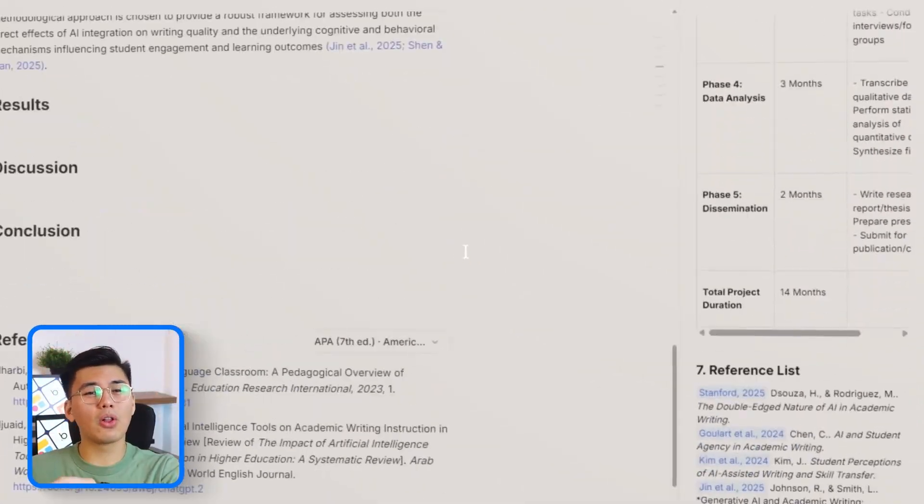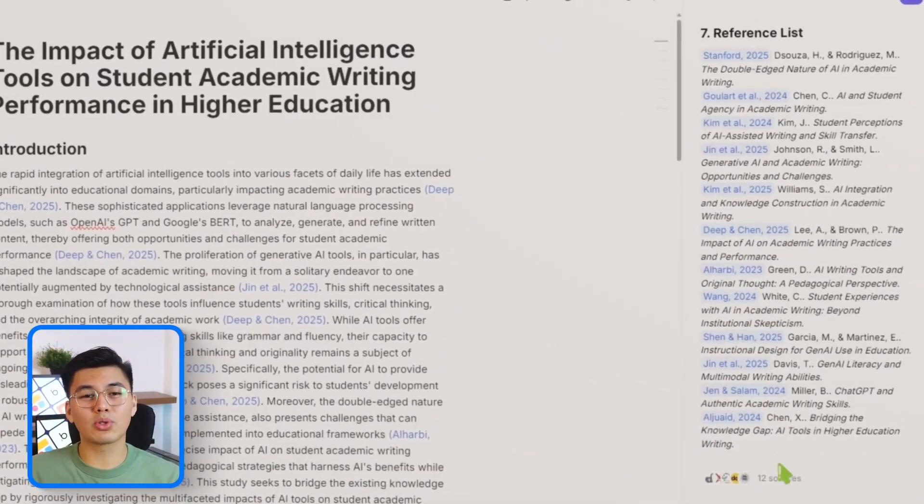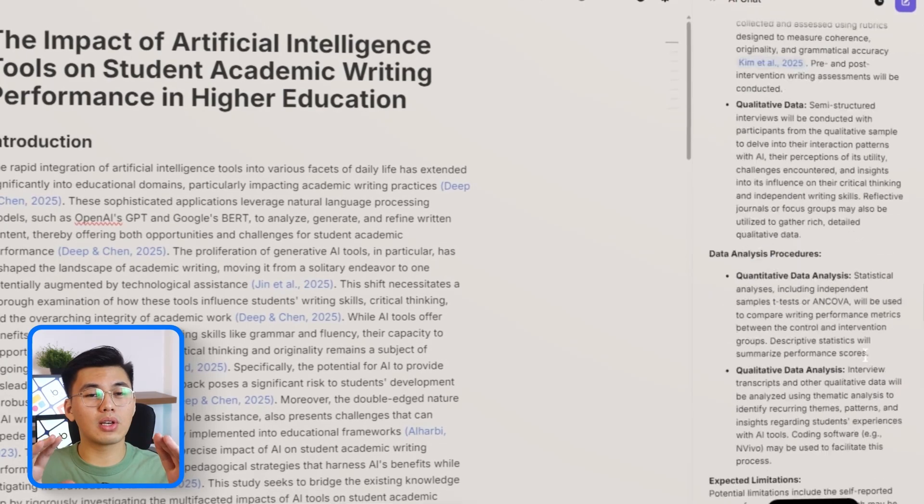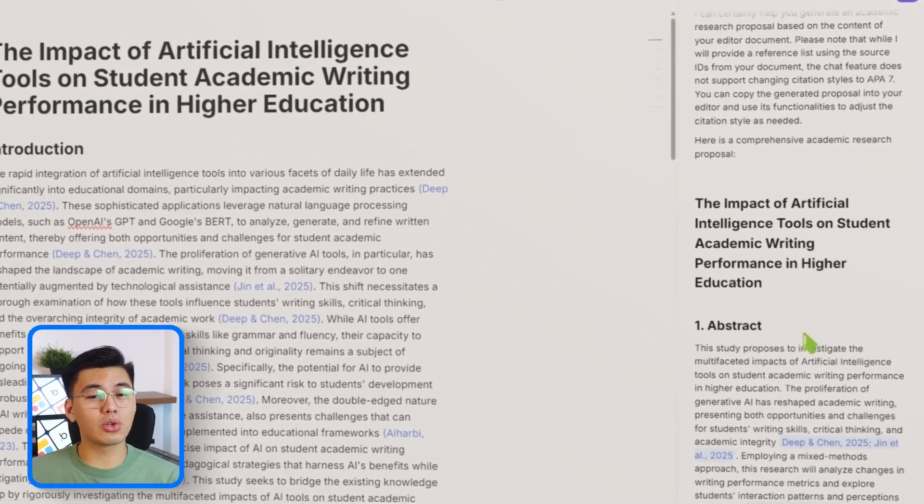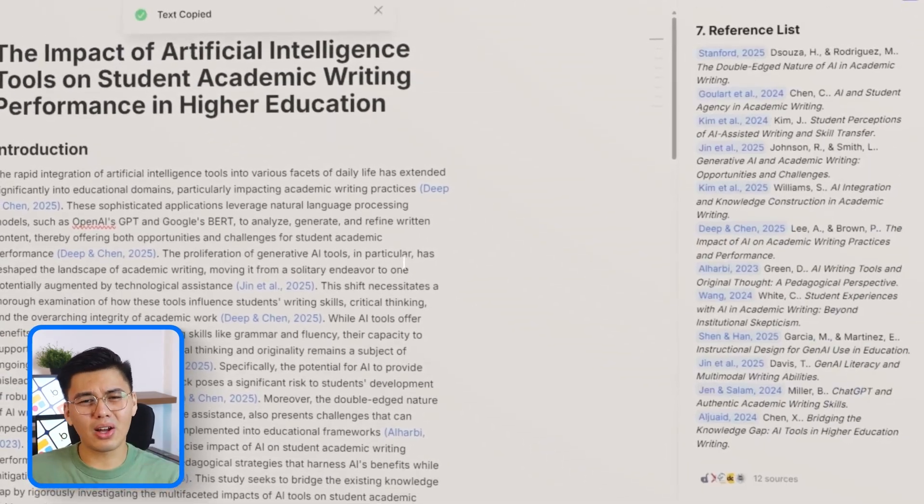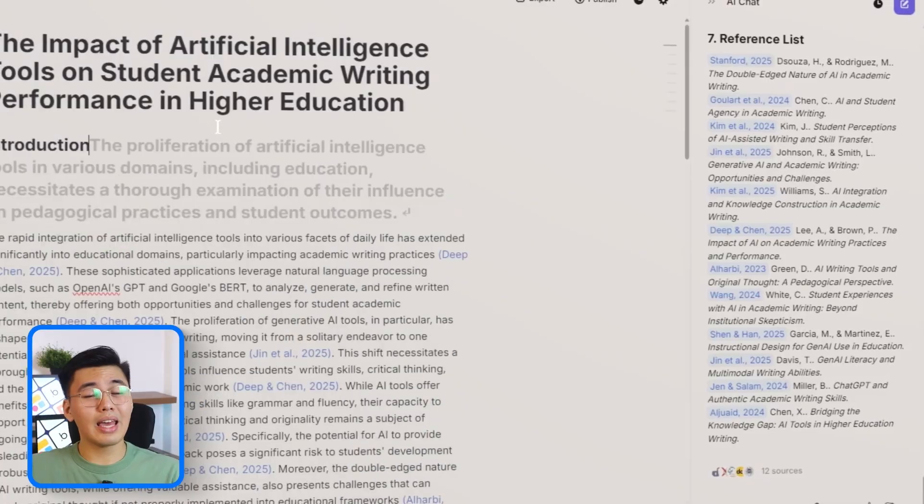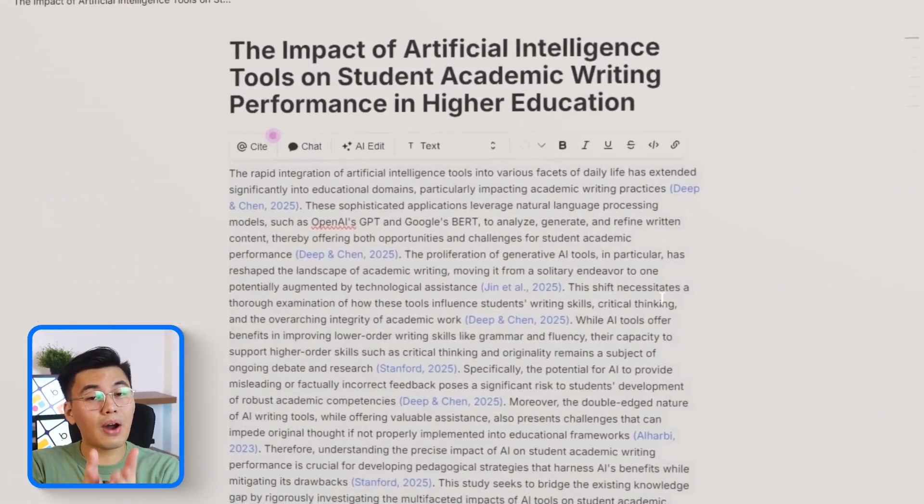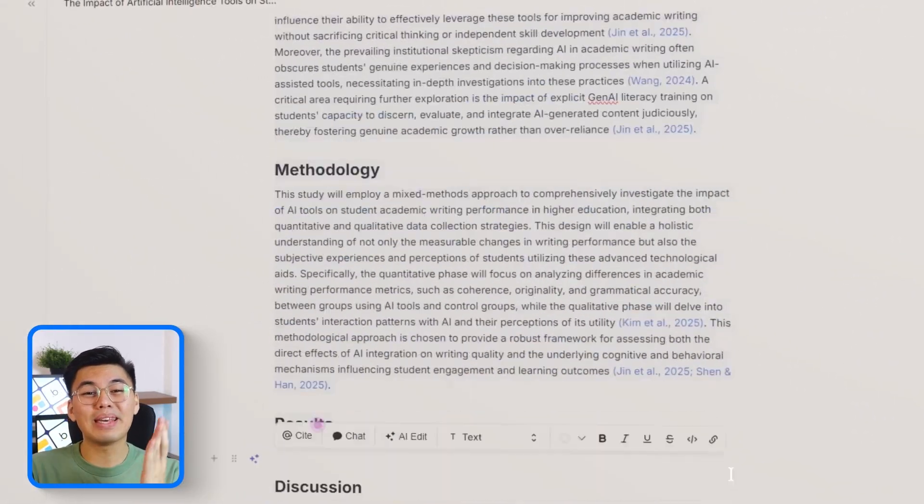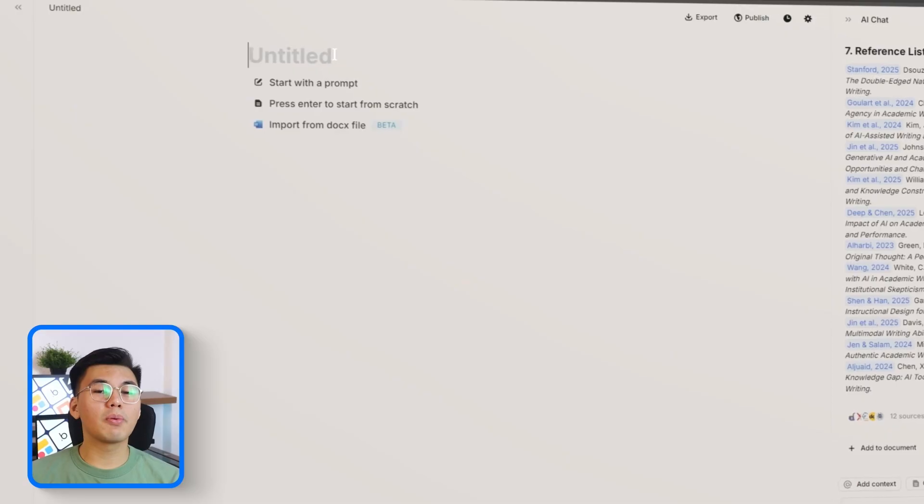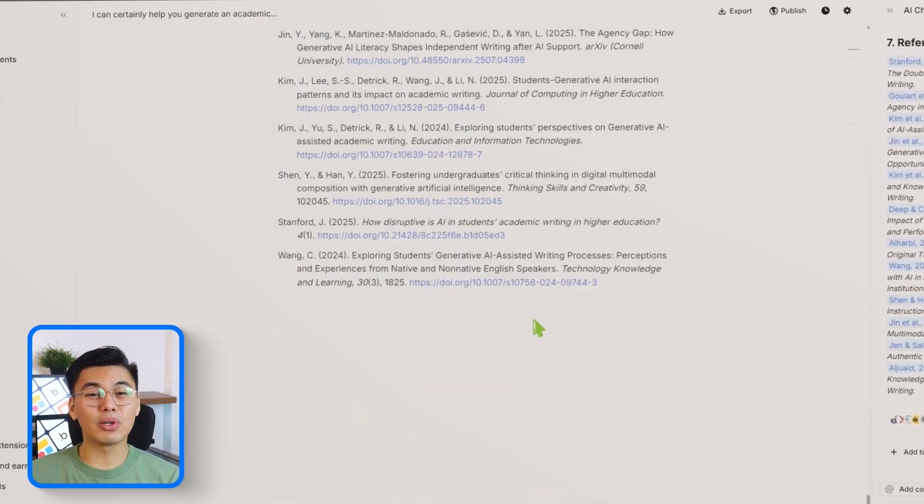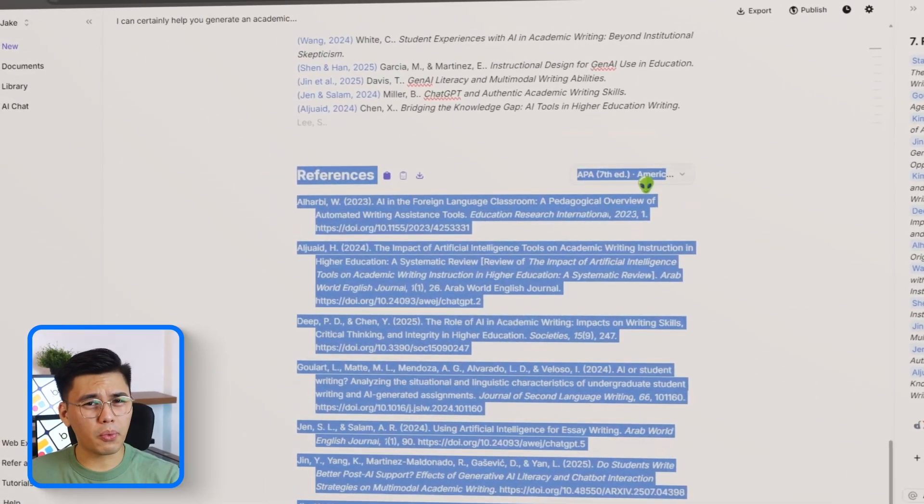Jenny processes the instruction and produces an entire research proposal in a matter of seconds. The title appears first, followed by a clean 100-word abstract, then a full background section, properly formatted research questions, a detailed methodology, the significance section, a realistic timeline, and finally, a complete APA reference list. Every component of a formal proposal is built automatically from that one prompt.